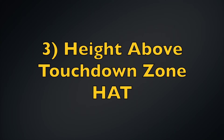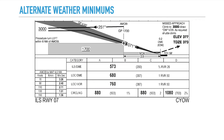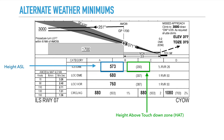The third concept to cover before we get into the alternate weather minimums is height above touchdown zone. I've listed a chart for the ILS 07 into Ottawa. The number on the left-hand side is the height above sea level, and the number on the right-hand side is the height above the touchdown zone, also referred to as HAT. Sometimes people get confused as to which is above sea level and which is above ground level. To make it easy: the lower number is going to be above ground level, and once you add in the airport elevation, you get the height above sea level.